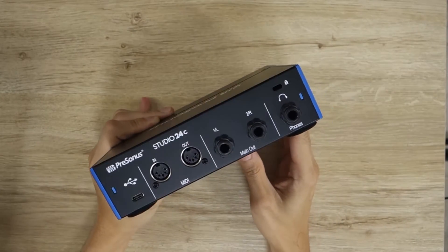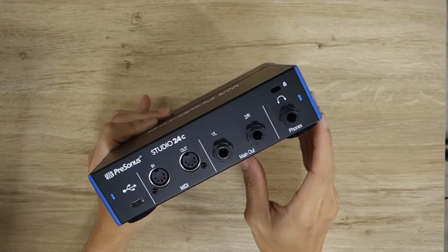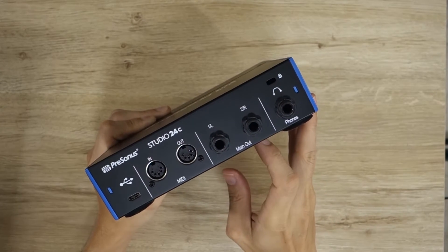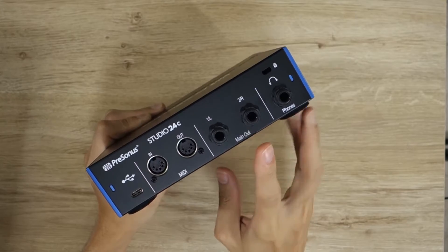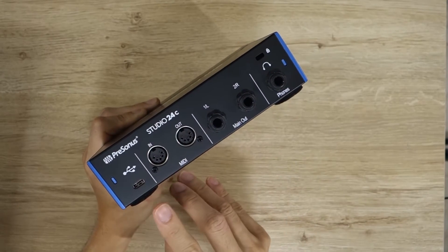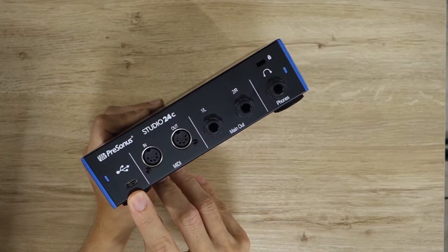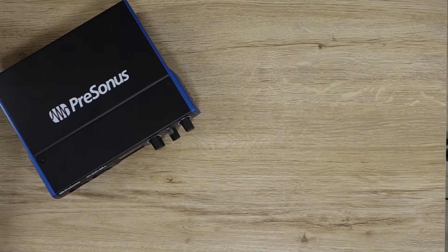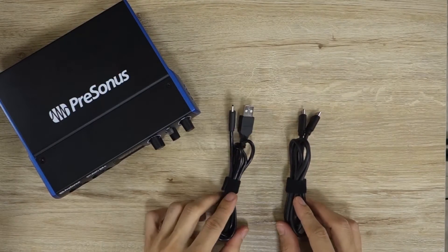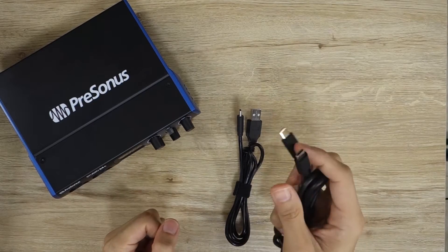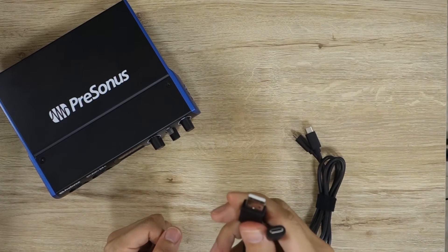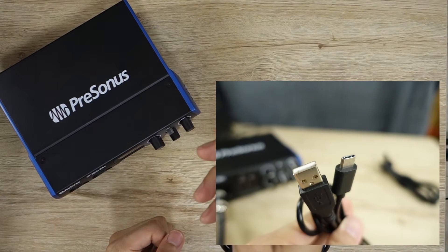On the back panel, we have our headphone output, our main outputs left and right, our MIDI inputs and outputs, and our USB-C port. Also included with the interface are two USB cables: a USB-C to USB-C cable, and a USB-C to USB-A cable.